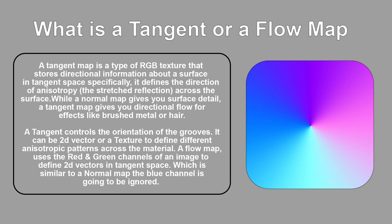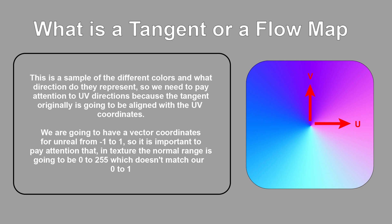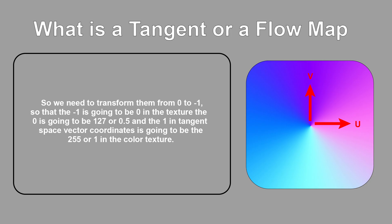A flow map uses the red and green channels of an image to define a 2D vector in tangent space, which is similar to a normal map. The blue channel is going to be ignored. We need to pay attention to UV directions because the tangent is originally going to be aligned with the UV coordinates. We will have vector coordinates for Unreal from minus 1 to 1. In texture, the normal range is 0 to 255, which doesn't match our 0 to 1. So we need to transform them so that 0 in the texture maps to minus 1, 127 or 0.5 maps to 0, and 255 or 1 maps to 1 in the tangent space vector coordinates.